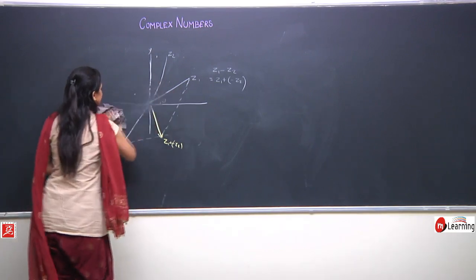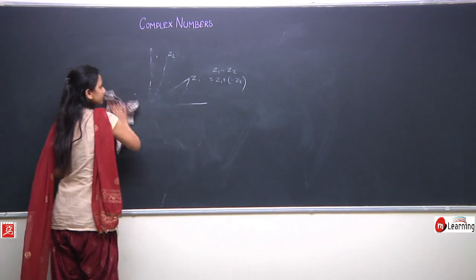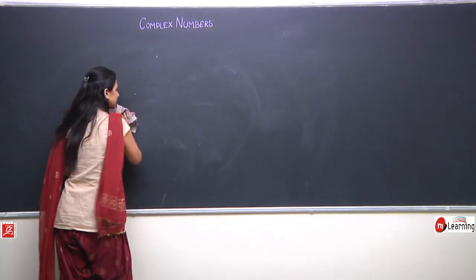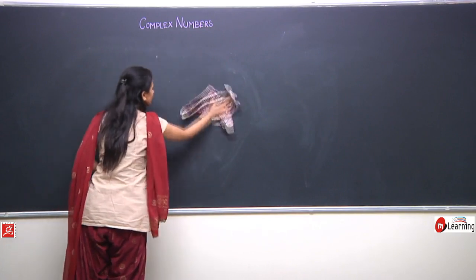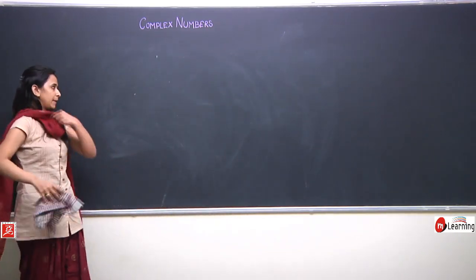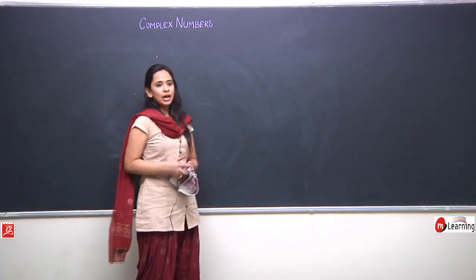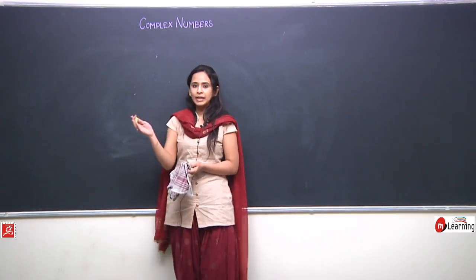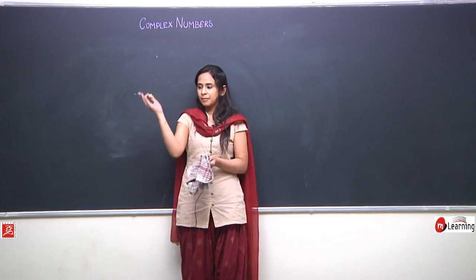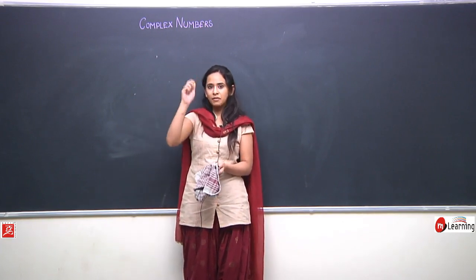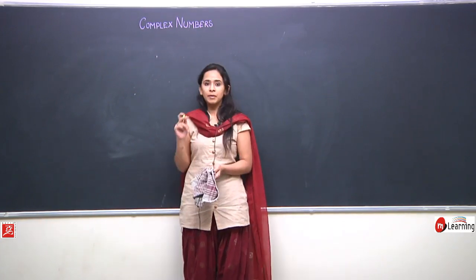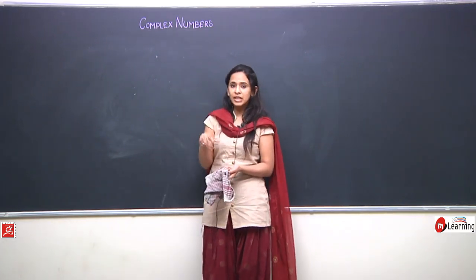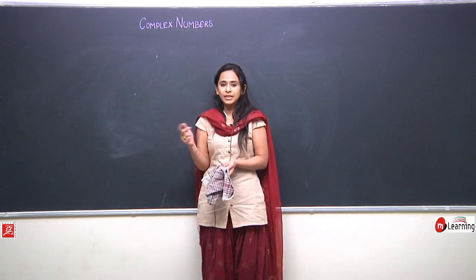This is all we discussed yesterday. The last topic was how to represent the locus of a set of points on the complex plane or Argand plane. We saw how to find the angle between two intersecting lines, how multiplying a complex number by e to the power iota theta rotates it by angle theta anticlockwise, and multiplying by e to the power minus iota theta rotates it clockwise. We also saw how to shift the origin for complex numbers, just as we do for real numbers.